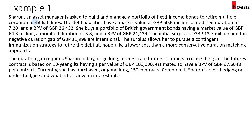In example 1, we have Sharon, an asset manager, who is asked to build and manage a portfolio of fixed income bonds to retire multiple corporate debt liabilities. The debt liabilities have a market value of £50.6 million, a modified duration of £7.2 million, and a basis point value of £36,432. She buys a portfolio of British government bonds having a market value of £64.3 million, a modified duration of £3.8 million, and a basis point value of £24,434.